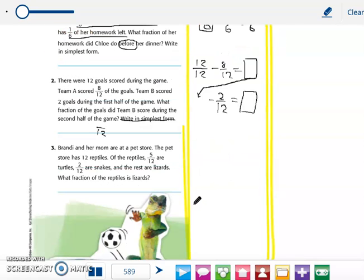Okay. Brandi and her mom are at a pet store. The pet store has 12 reptiles. Of the reptiles, 5 are turtles, 2/12 are snakes, and the rest are lizards. So what fraction of the reptiles is lizards? This is a two-step problem. It's just like number two. So you should be able to set that up. And remember you're starting out with the whole, which is 12/12.